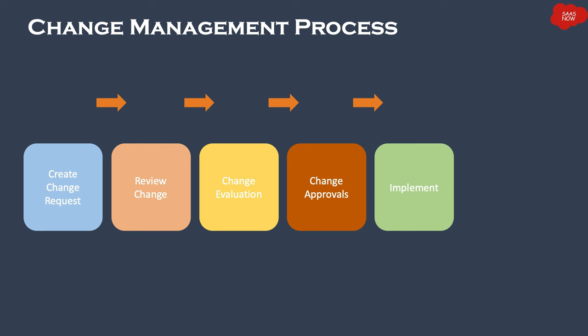Once all reviews and approvals are done, we have implementation — the change is implemented by the implementer group or implementer as per the schedule. The last activity is validation: once the change is implemented, it has to be validated to ensure it was properly implemented and has not broken any other component of the service. Different IT teams with dependencies on the IT service will perform the validations.